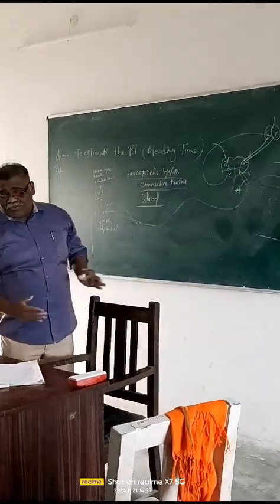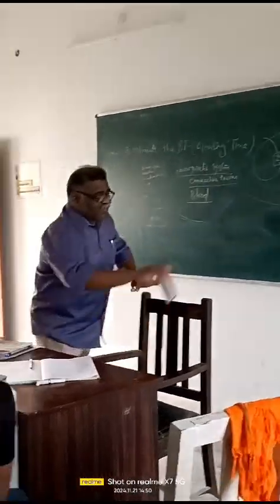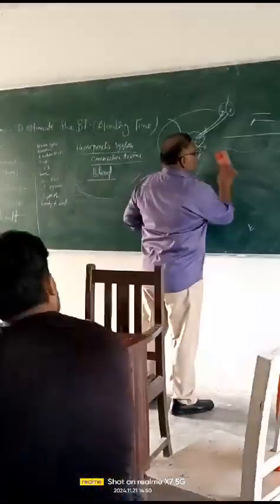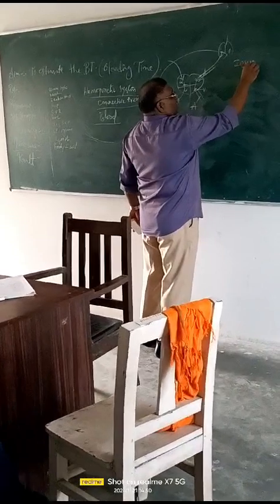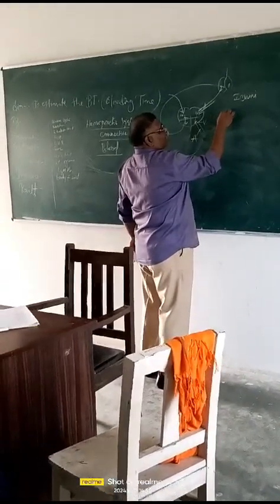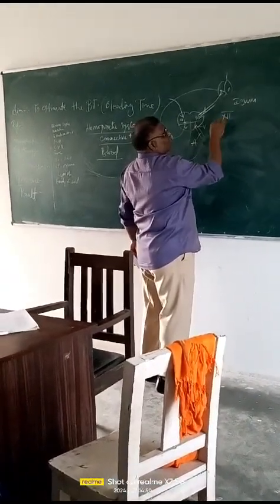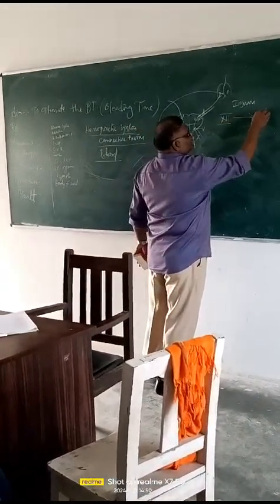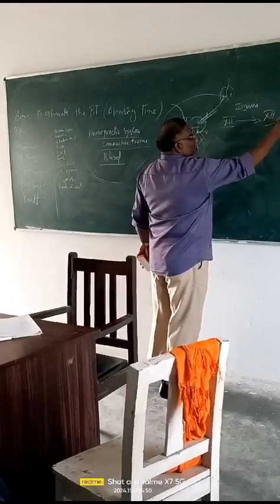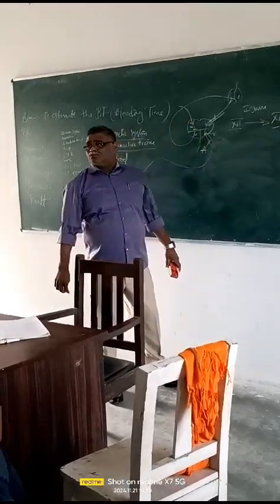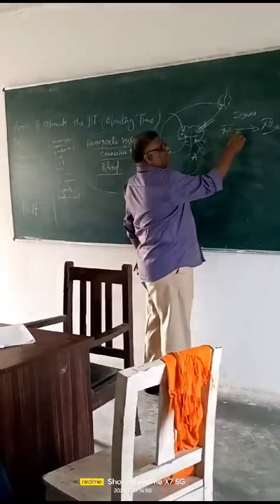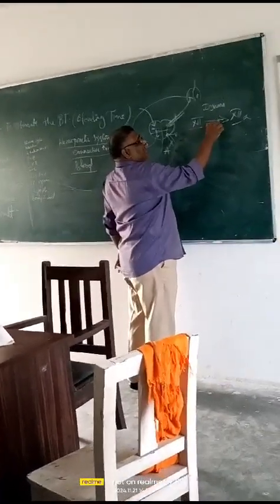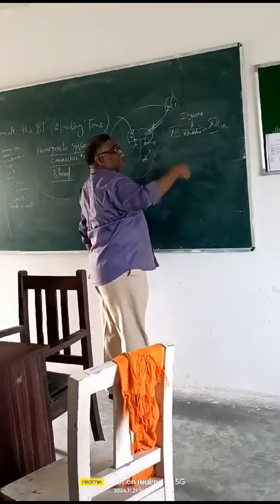I am going to explain the mechanism briefly. When an injury occurs, there is a factor in the blood called factor 12. The epithelium acts as a catalyst for activating this factor.